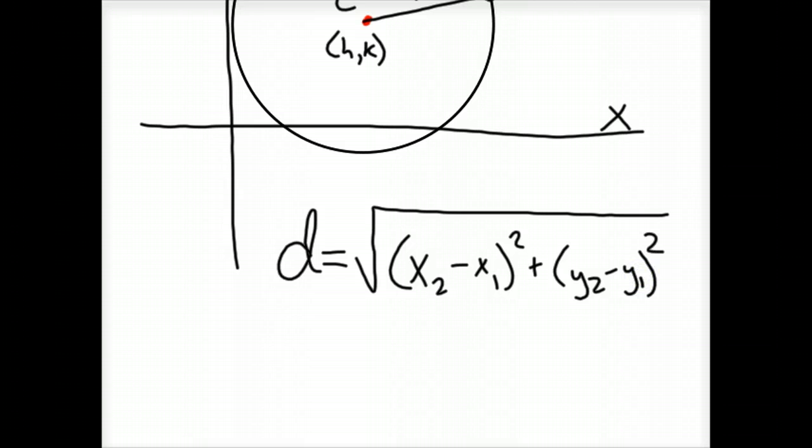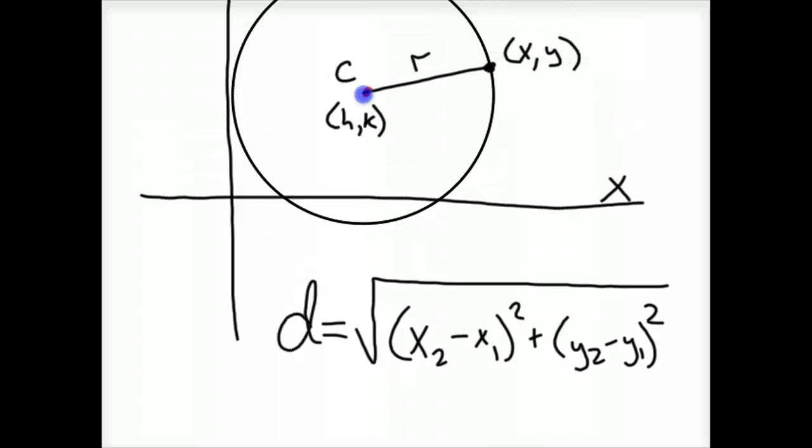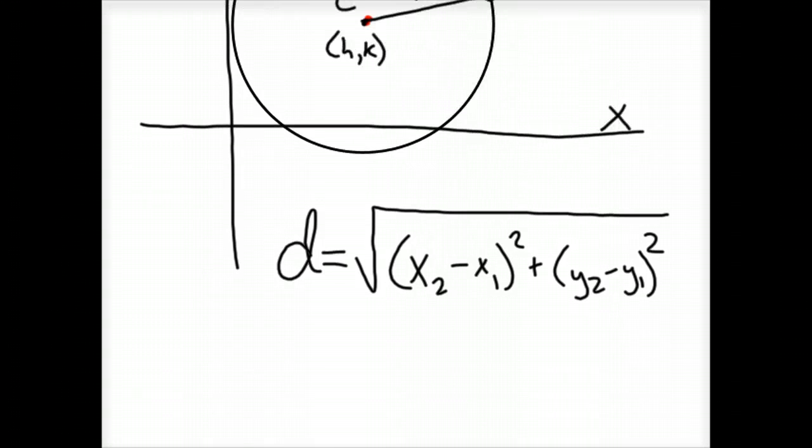x2 minus x1 squared plus y2 minus y1 squared. And so if our two points were hk and xy, it looks something like this. And our distance between the two points is R. So here's my distance between the two points and R. And we don't know what any of the xy's will be, they're going to be our variables. And hk is my center, it'll be an actual point, like 2, 3, or 4, 7, or whatever.